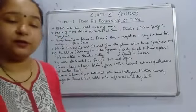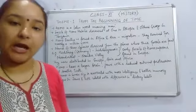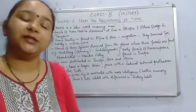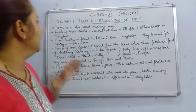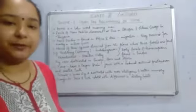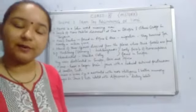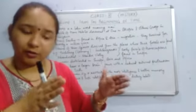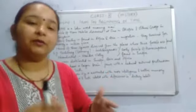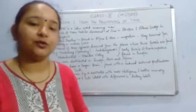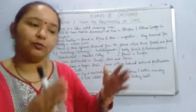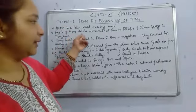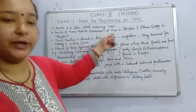Homo is a Latin word which means 'man.' Homos are a comparatively much more advanced species than australopithecus. Homos were categorized into three categories: Homo habilis, Homo erectus, and Homo sapiens.